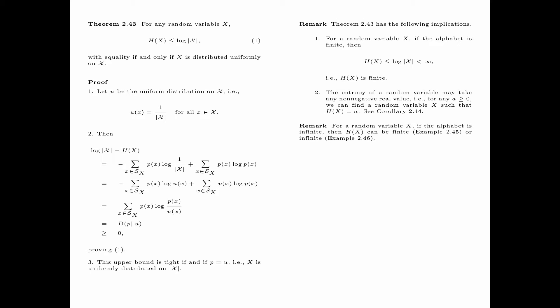There is something which is not implied by Theorem 2.43. For a random variable x, if the alphabet is infinite, then the entropy of x can either be finite or infinite. Next, we give an example where a random variable x has a countable alphabet but the entropy is finite. Let x be a random variable such that the probability of x equals i is equal to 2 to the power minus i, for i equals 1, 2, and so on.